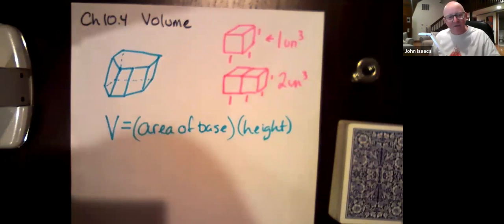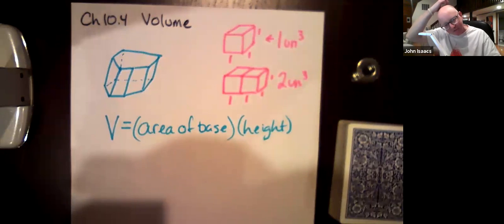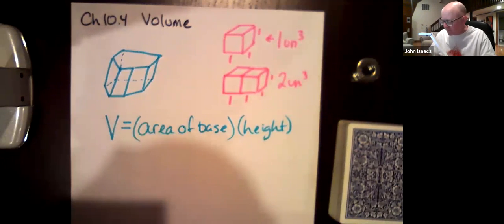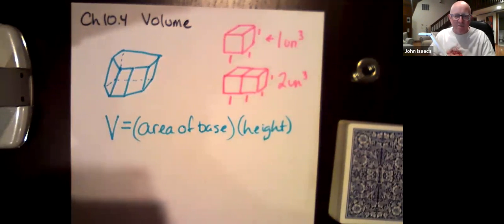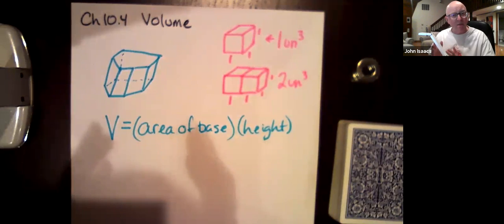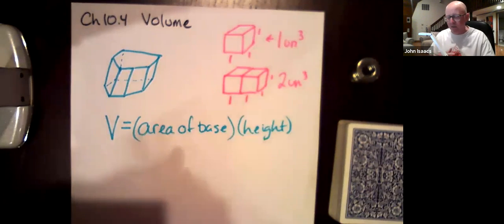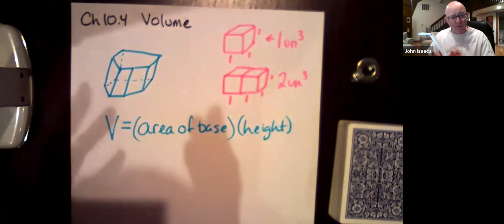I'm Math 15ers. We're looking at chapter 10.4, which is about volume. You might think of volume as being simply length times width times height, which is fine for a rectangular prism.